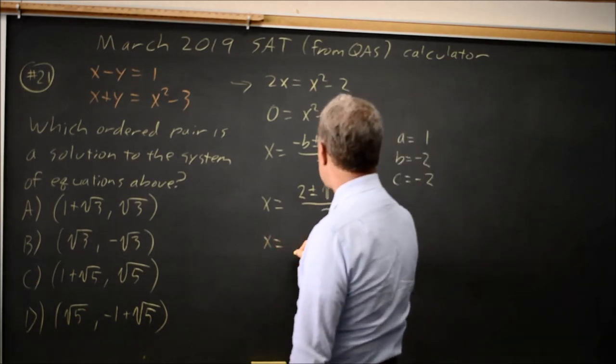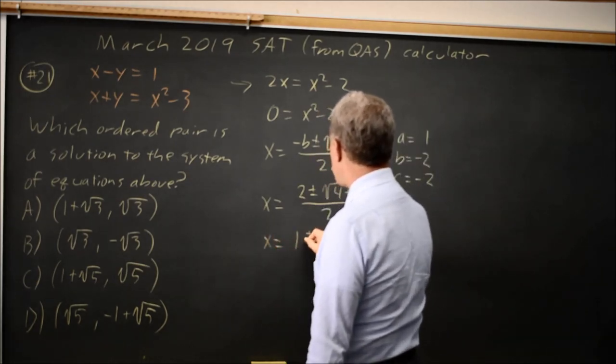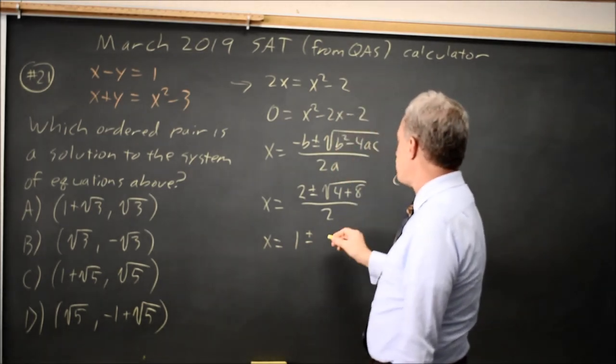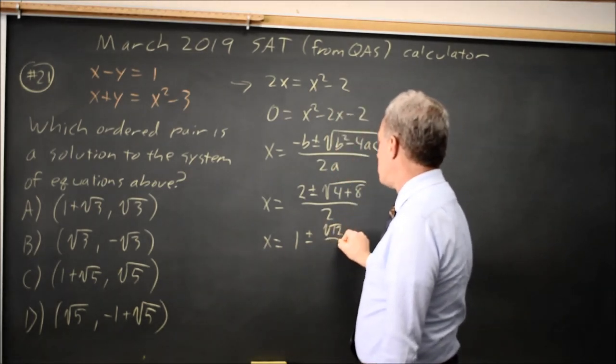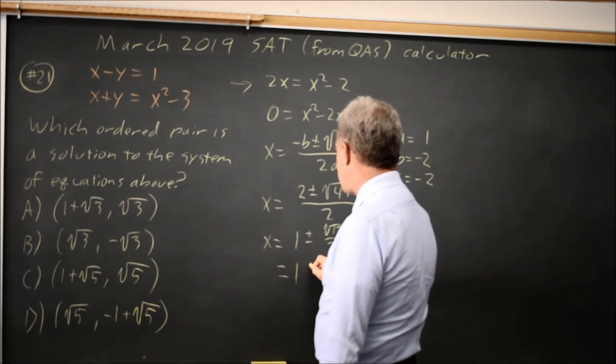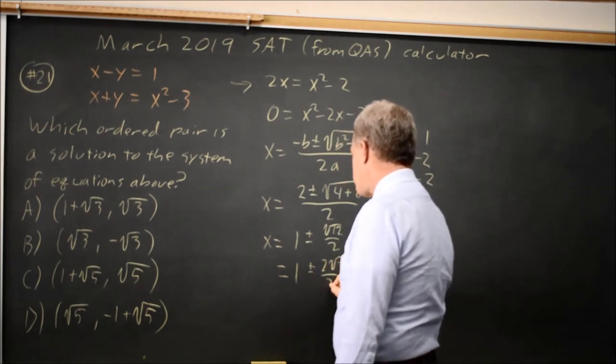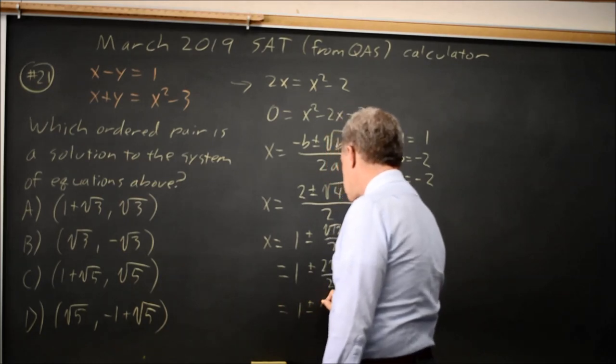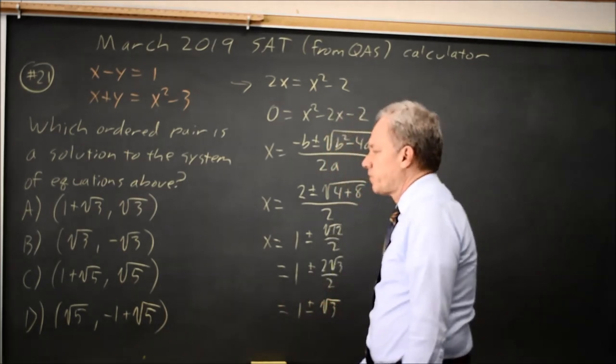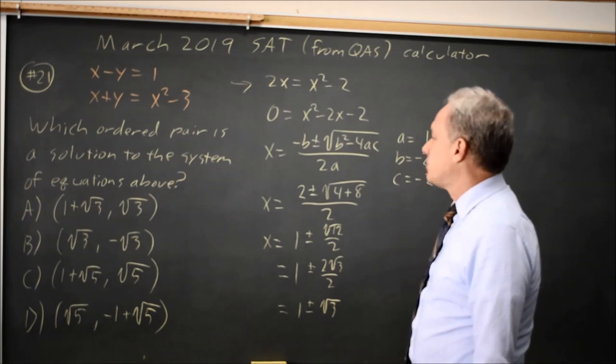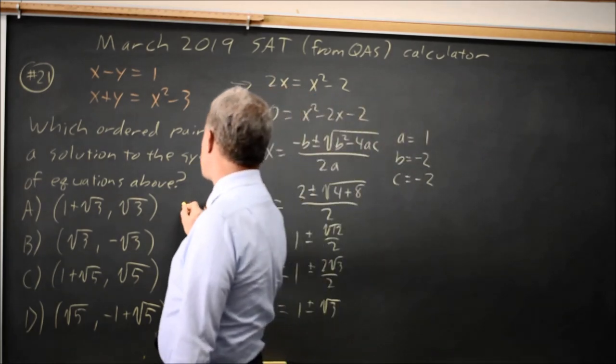So x equals 2 over 2 is 1 plus or minus square root of 12 over 2, and that is 1 plus or minus 2 root 3 over 2, which is 1 plus or minus square root of 3. So the x value of my solution should be 1 plus root 3.